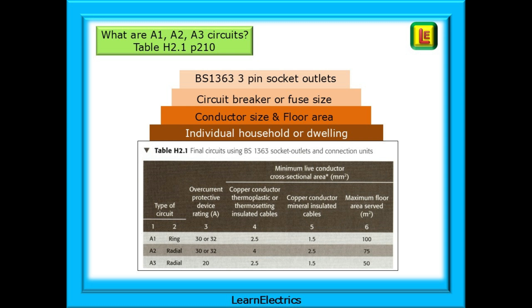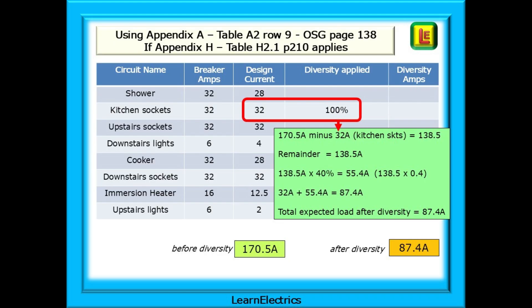Looking at Table H2.1 on page 210, we see an explanation of A1, A2, and A3 circuits for the sockets. Nothing complicated, and subsequent pages discuss the rest of the installation. Applying diversity to the same installation, I've chosen the kitchen sockets as the 100% circuit — 32 amps. So 170.5 amps minus 32 amps is 138.5 amps. We now find 40% of this remainder, which is 55.4 amps. Add back in the 32 amps for the kitchen, and we have a new diversity figure of 87.4 amps.